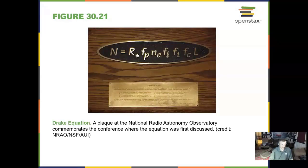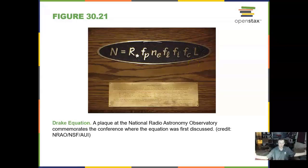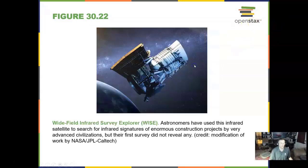The Drake equation came up by Frank Drake. A plaque here at the National Radio Astronomy Observatory shows what the equation looked like when he announced it. In the time since, that equation has been expanded, as we now know of other planets that could have life on them. The WISE spacecraft is a wide-field infrared survey camera in space.